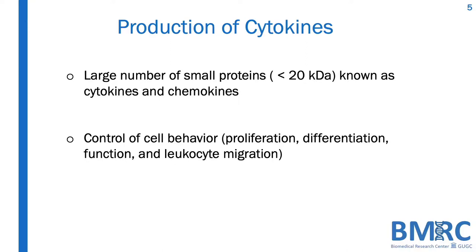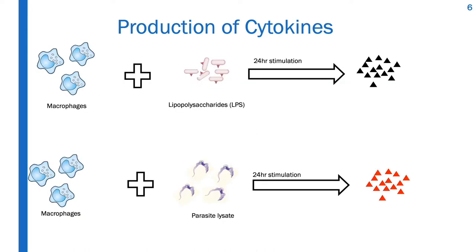Cytokines are numerous small proteins that control immune cell behavior such as proliferation, differentiation, function and leukocyte migration in response to an invading pathogen. They are majorly produced by immune cells such as macrophages, B lymphocytes and T lymphocytes.